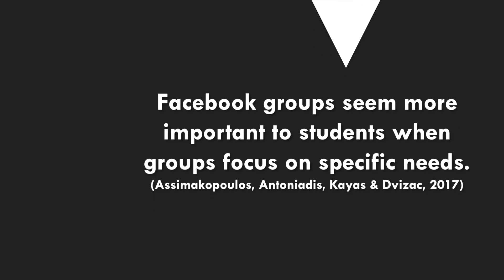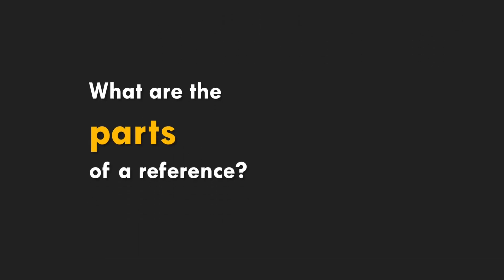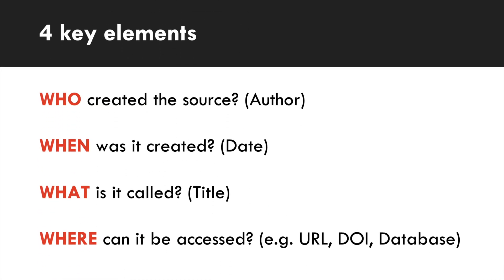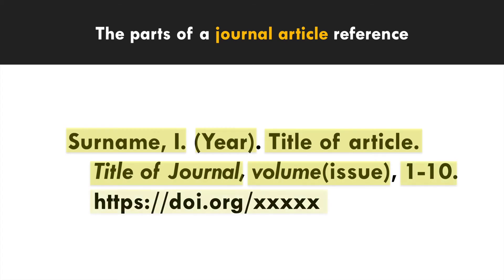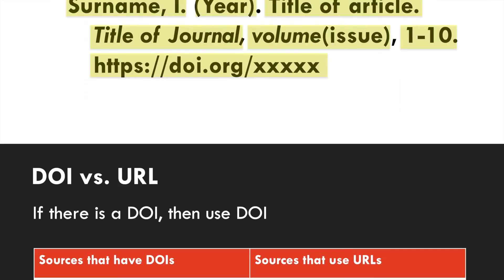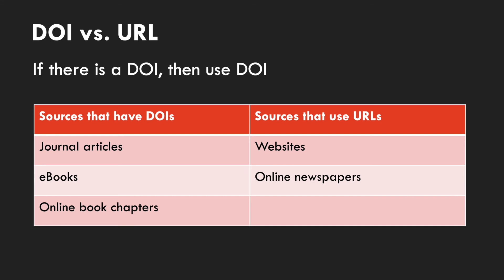Now we need to consider the different parts of a reference. There are four key elements when creating reference lists: who created the source, when was it created, what is the title of the article, and where can it be accessed — which might be a URL for a website or a DOI (digital object identifier) for a journal article. The parts of a journal article reference include the surname, year of publication, title of the article, title of the journal, volume in italics, issue number, page number, and the DOI. Most sources with a DOI include journal articles, e-books, or online book chapters, while URLs are used for websites or online newspapers.